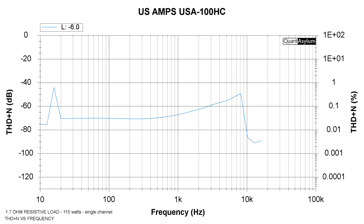If we drop the resistive load to 1.7 ohms and run the same 1 kHz test at 115 watts, we can see that we stay below 0.03% THD plus noise up until 1 kHz. Then it slowly climbs up to 0.2% at around 8 to 9 kHz, and then drops way back down to below 0.05% up until 20 kHz.